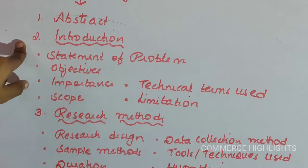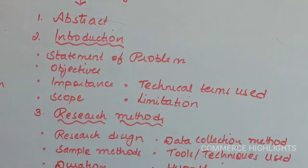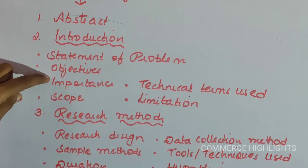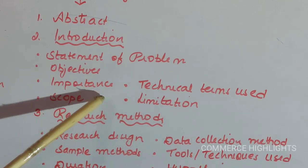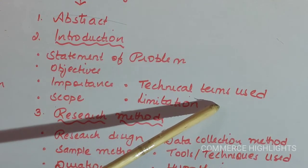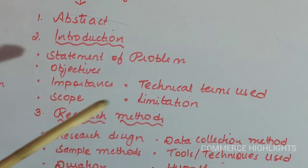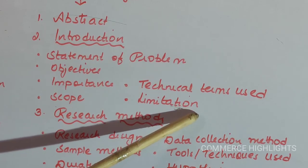The second element is the introduction, where the researcher introduces his study. The introduction should include: the statement of the problem — what factors led the researcher to do his research; objectives — what are the objectives of the research work; the importance of the study; definitions of any technical terms used; the scope or area covered by the researcher; and any limitations faced by the researcher while conducting the research.